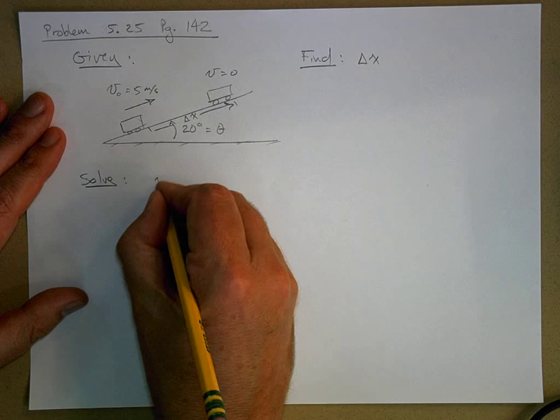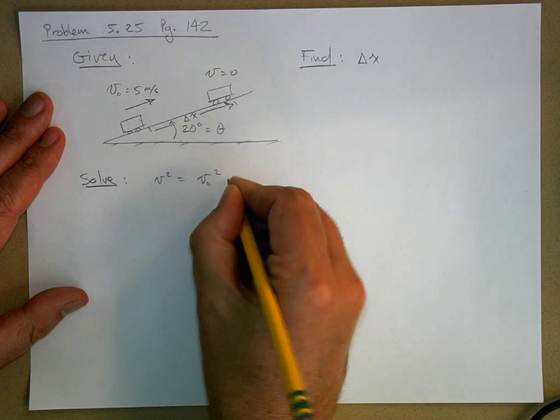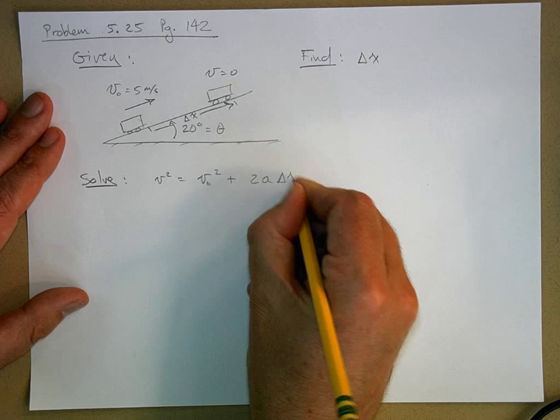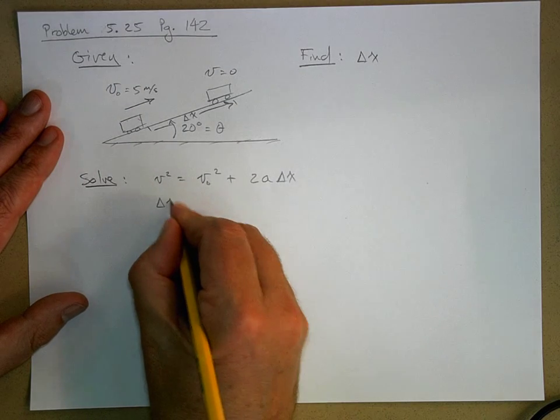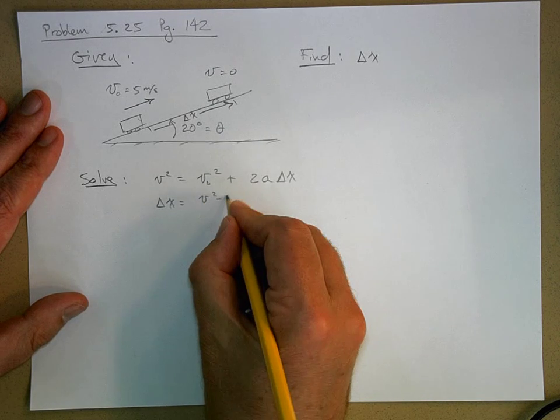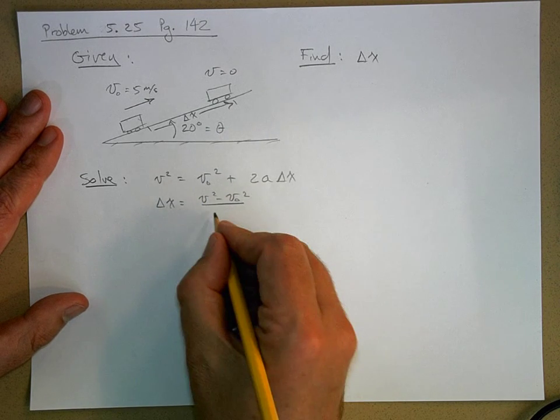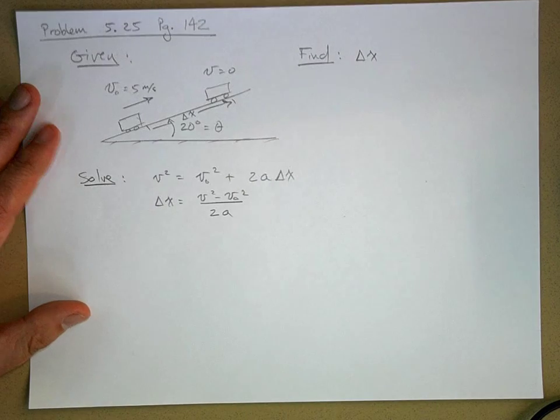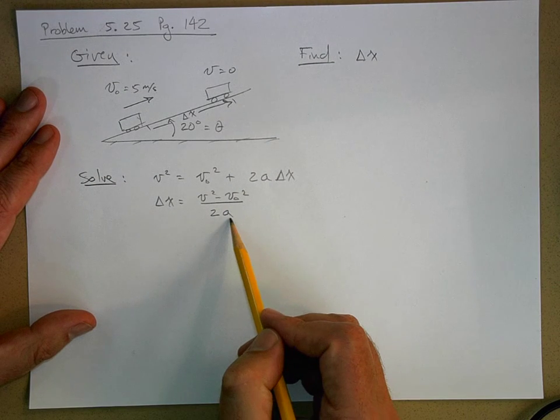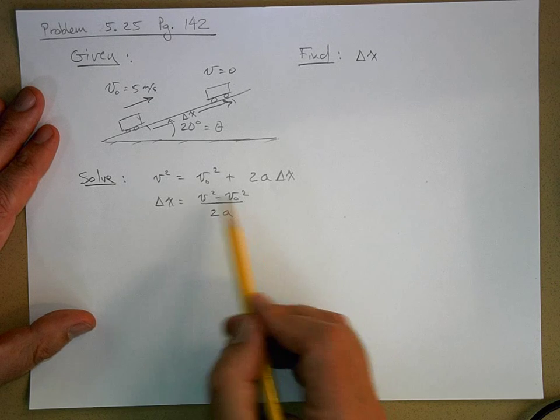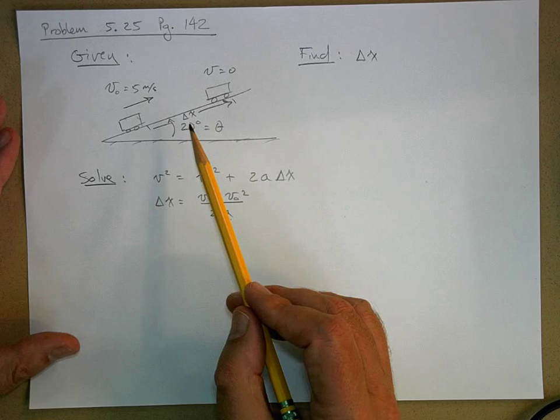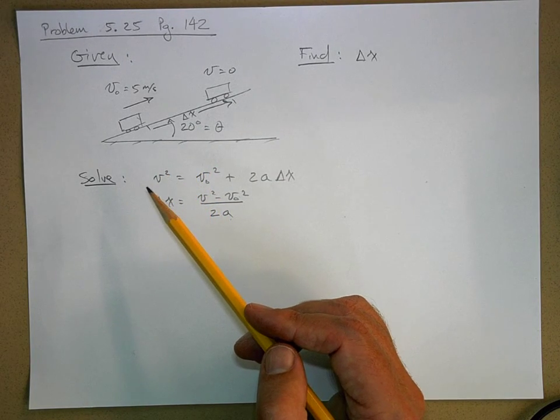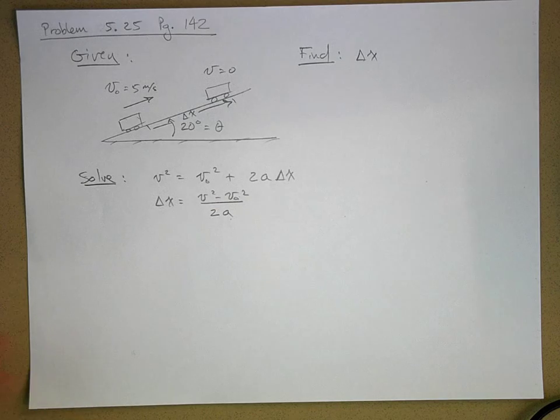The fourth one where it says v squared equals v naught squared plus 2a delta x, and I'm going to solve for delta x. V squared minus v naught squared over 2a. Now I need to figure out what the acceleration is and everything else I know. So when I have a situation where I've got an object that has forces on it, the way to figure out what the acceleration is is to apply the procedure. So now I'm going to use the procedure.